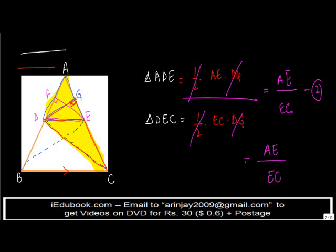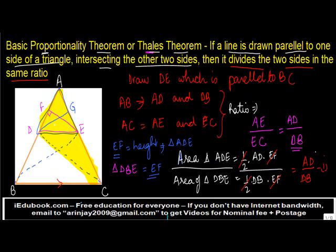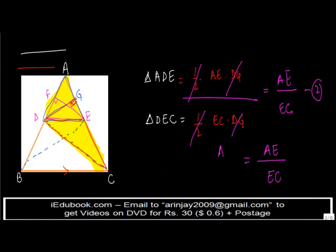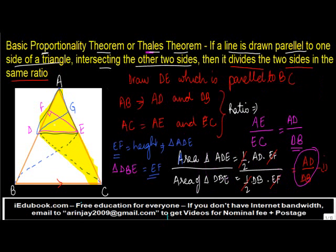If we equate equation one and equation two, we get AE upon EC equals AD upon DB. In other words, the ratio AD:DB equals the ratio AE:EC. So if a line DE is drawn parallel to BC, intersecting the other two sides at points D and E, then it divides the two sides in the same ratio. I hope you had a good time understanding this. Thank you for being with us today.